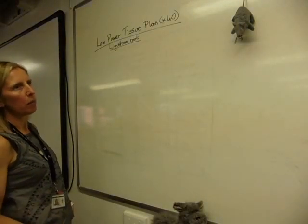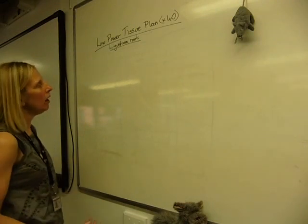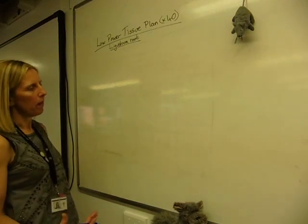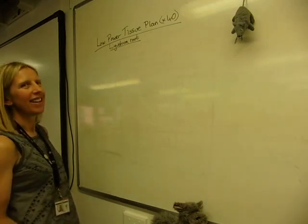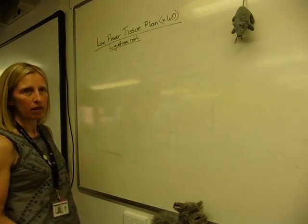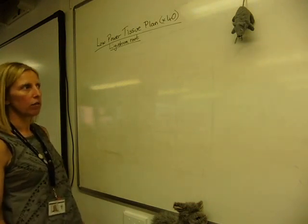We're going to look at how to draw a low power tissue plan, which you need to do quite often over your two years. There are lots of rules and guidelines that you need to follow. The first one is that you use a sharp pencil and you draw it as big as you can on the page. If it takes up the whole page, that's good.